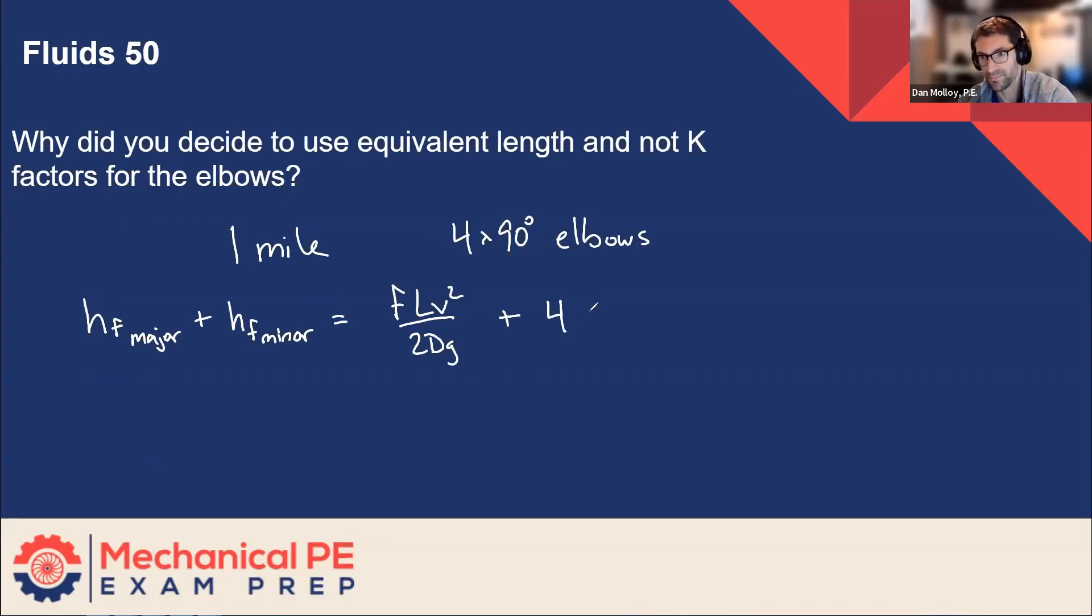And since there's four elbows it'd be four times K v squared over 2g. And then you'd be looking up these K factors in some table for a 90 degree elbow.